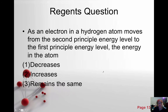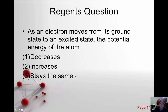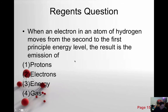As an electron in a hydrogen atom moves from the second principal energy level to the first, the energy in the atom decreases, because energy levels are higher as we go outward from the nucleus. When it's excited it moves outward to higher energy levels, and when it comes back to the ground state, energy decreases going in toward the nucleus. As an electron moves from the ground state to an excited state, the potential energy of the atom increases. When an electron in hydrogen moves from the second to the first principal energy level, the result is the emission of energy in the form of light.